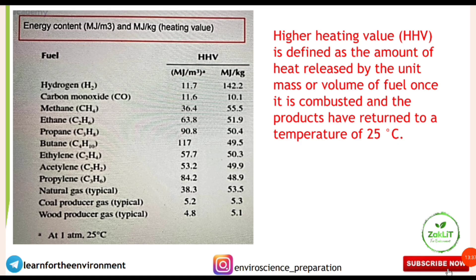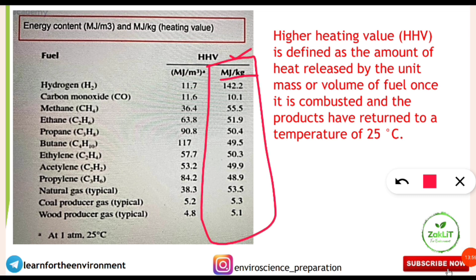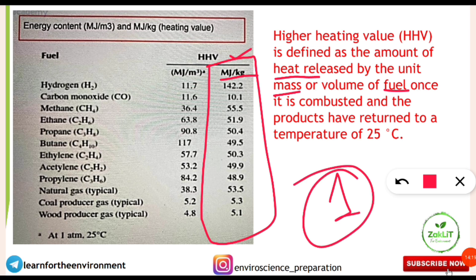The concept is taken from Energy and Environment. The energy content of different fuels is given in table form — it is asked either in sequential form or you have to find which fuel has the highest energy content or heating value. The unit used is HHV (Higher Heating Value) in megajoules per kilogram. Higher Heating Value is defined as the amount of heat released by unit mass or volume of fuel once it is combusted and the products have returned to a temperature of 25°C.